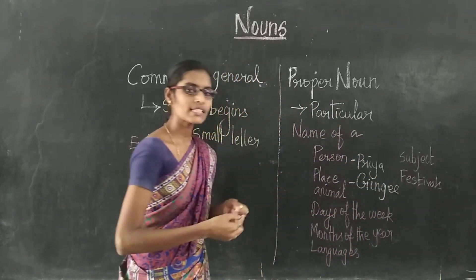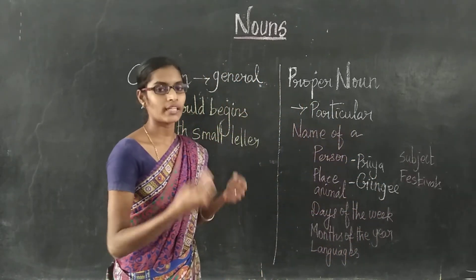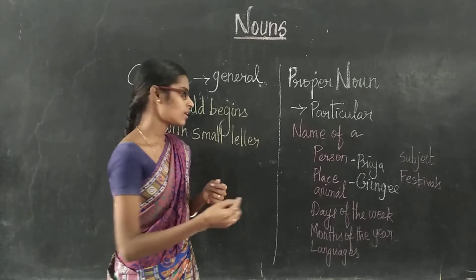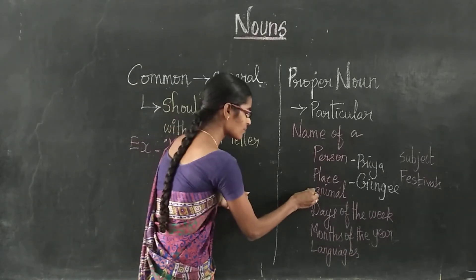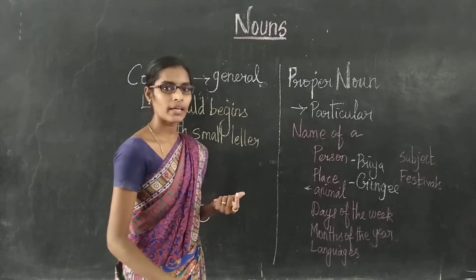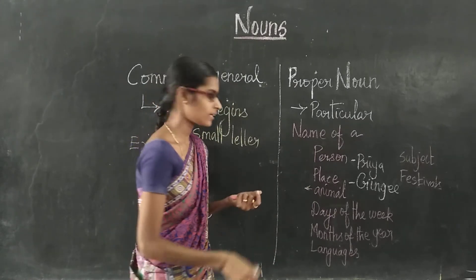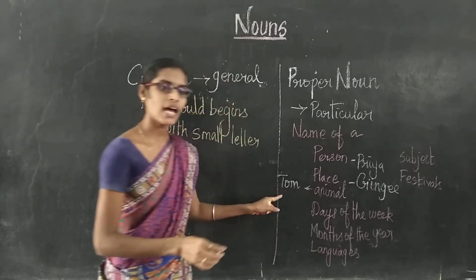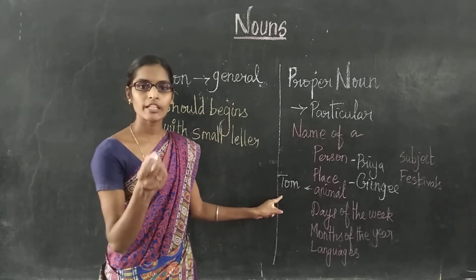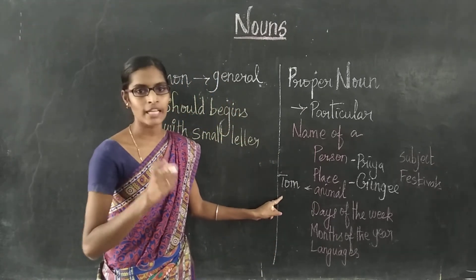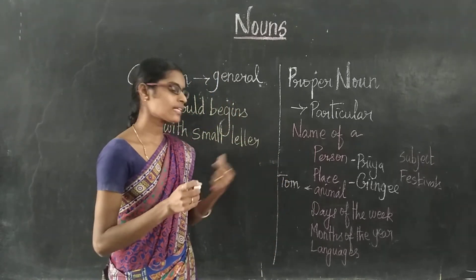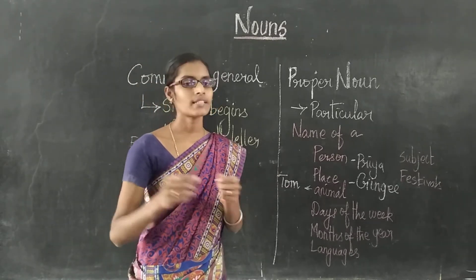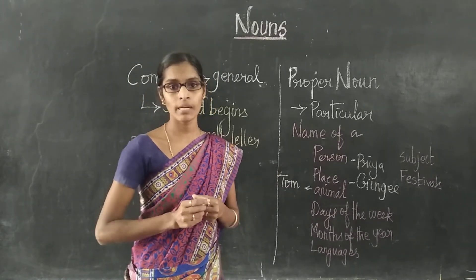Animal — if the animal has its own particular name, it comes under the Proper Noun. For example, Tom is a particular animal's pet name, so Tom is a Proper Noun. Dog, on the other hand, is a Common Noun.